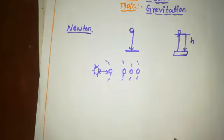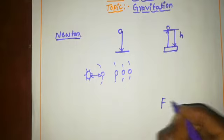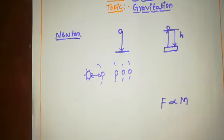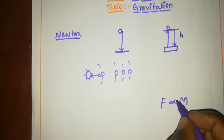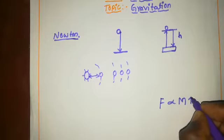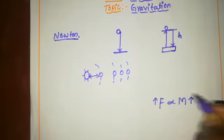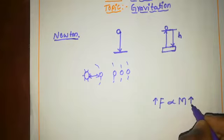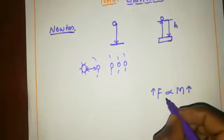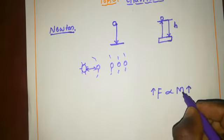In the previous class we learnt about force. The force is directly proportional to the mass, that is F is proportional to M. It means if the mass increases, the force will automatically increase. If the mass decreases, the force will decrease. The force is directly proportional to the mass of the object.